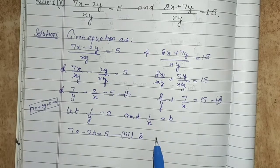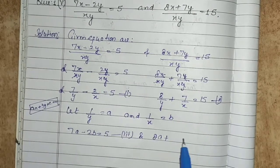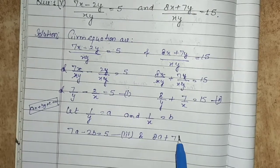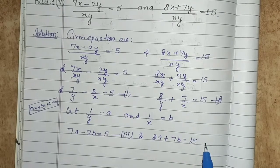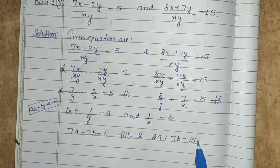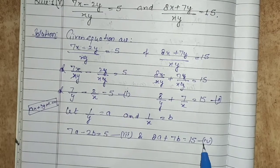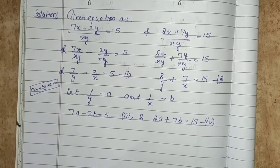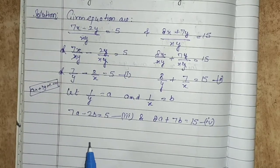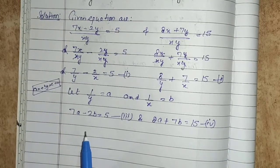Similarly, 8 upon y plus 7 upon x becomes 8a plus 7b equals to 15. This is equation number 4. We now have equations 3 and 4 in standard form ax plus by plus c equals to 0, and we can solve them using substitution, elimination, or cross multiplication.